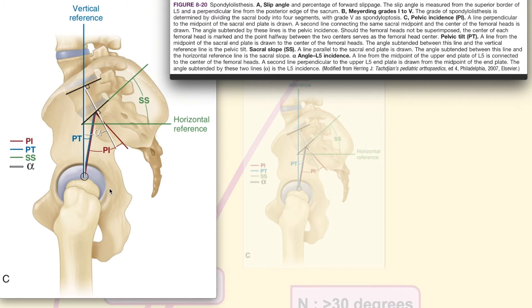So, the pelvic incidence as the one here in red is a line perpendicular to the midpoint of the sacral end plate. And then, the second line connects the same reference point to the center of the femoral head. And the angle formed by these two lines are called the pelvic incidence.